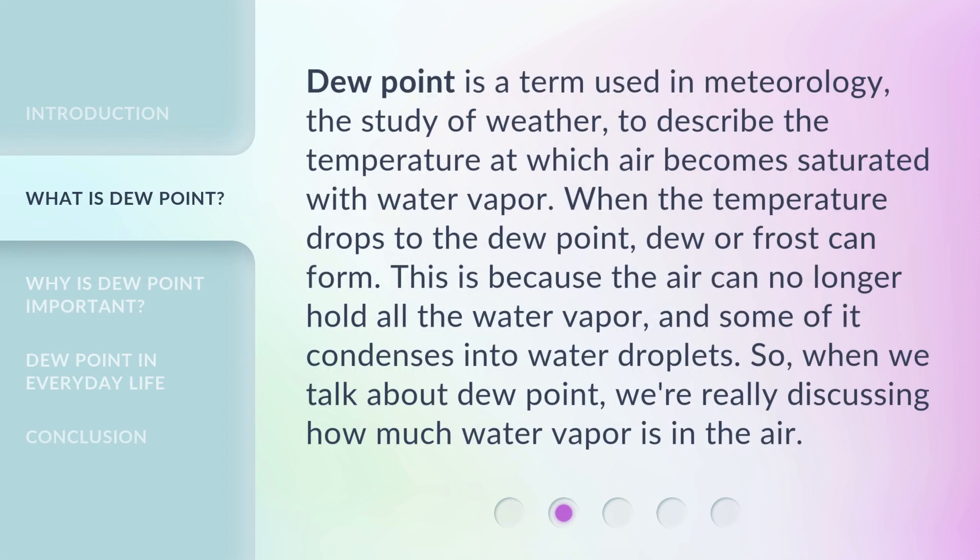Dew point is a term used in meteorology, the study of weather, to describe the temperature at which air becomes saturated with water vapor. When the temperature drops to the dew point, dew or frost can form. This is because the air can no longer hold all the water vapor, and some of it condenses into water droplets.